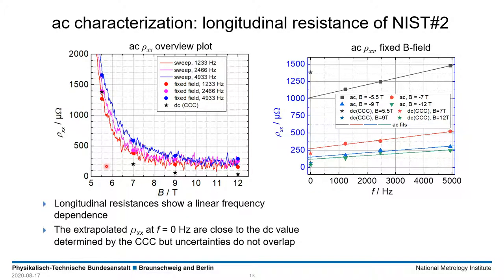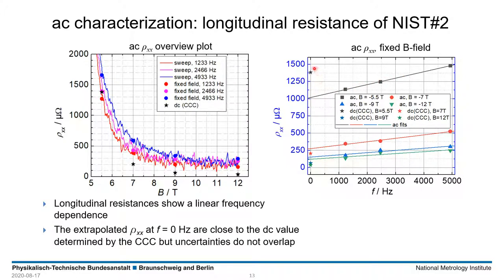The CCC data points representing measurements at 0 Hz are given by black stars. In the right diagram, the frequency dependence for the different B-fields shows a linear dependence that follows the tendency of the CCC measurement. However, at higher fields where the sample was well quantized, the DC results were slightly smaller compared to the extrapolated AC results by about 50 to 100 µΩ. At lower fields where quantization was not very good, the opposite was observed, with the true DC measurement showing about 300 µΩ higher values than the extrapolated value from the AC measurement.